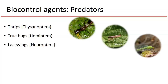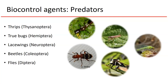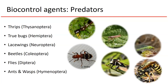Lacewings are another common predator in agricultural environments. The pictured green lacewing adults don't feed much — it's the larvae, the immature stages, that are voracious predators, and many are very effective aphid predators. All life stages of beetles can be predatory, so larvae and adult beetles can both provide biological control. There are also predatory flies such as the robber fly, and ants and wasps in the order Hymenoptera are also very effective predators and very common in cropping systems.